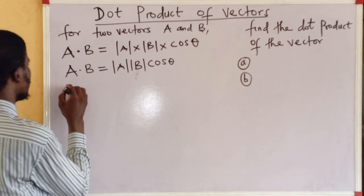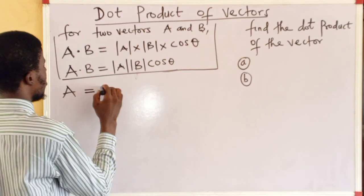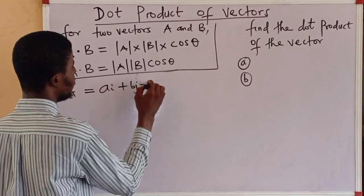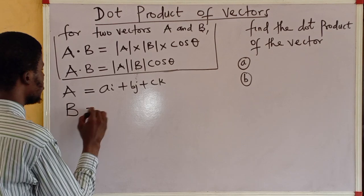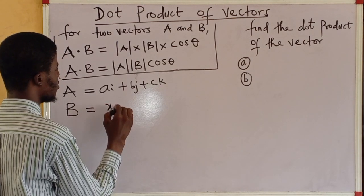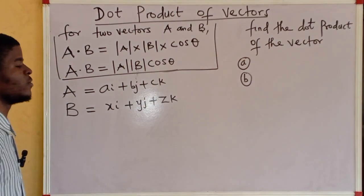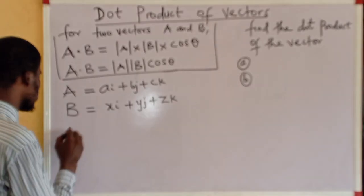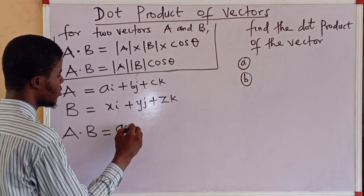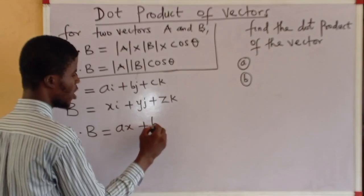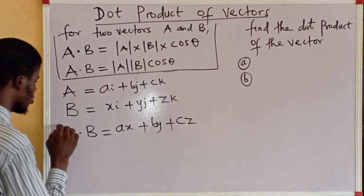For example, if vector A equals ai plus bj plus ck, and vector b equals xi plus yj plus zk, then the dot product a dot b is: a times x, plus b times y, plus c times z. This is how to obtain the dot product in component form.